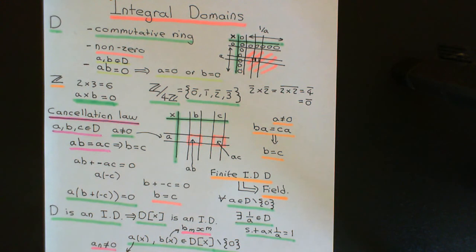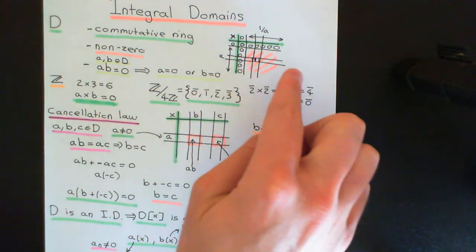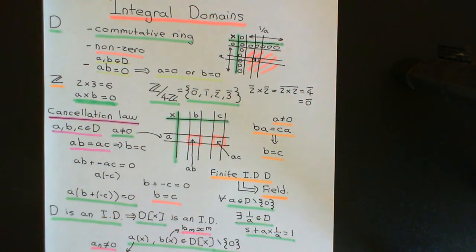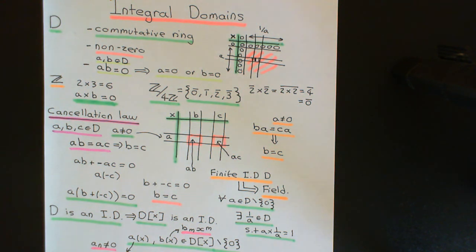This applies for all non-zero elements a from the integral domain. It only doesn't work for zero, because the fact about rows and columns doesn't hold for zero. So that's the simple explanation: if you have a finite integral domain, it must be a field, because all rows and columns corresponding to non-zero elements contain all elements once and only once. For an infinite integral domain, saying you can't have repeats doesn't mean every element must appear — infinite set theory is very different from finite set theory. So finite integral domains are all fields. That's theorem number two, and with that I'll end this introductory video on integral domains.